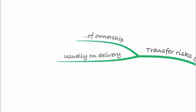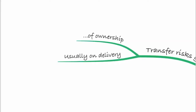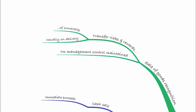So we cannot recognise revenue until the goods are delivered. We also need no management control maintained over the goods. For example, if you sell goods to a wholesaler who sells them at a price you stipulate and doesn't pay you until they sell them, they're merely acting as your agent. You can't recognise the revenue until they sell the goods on.